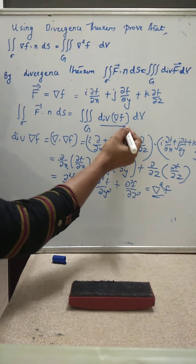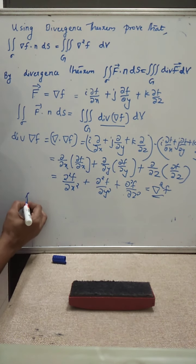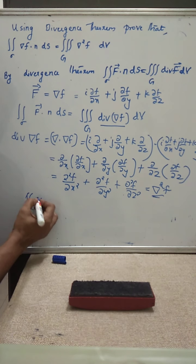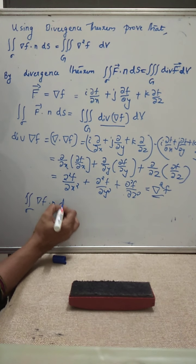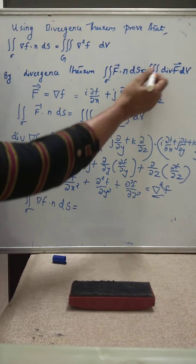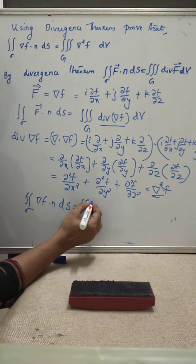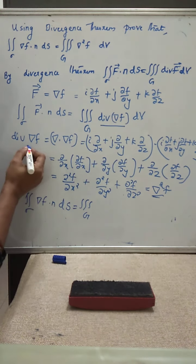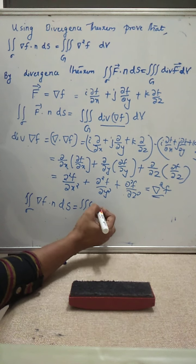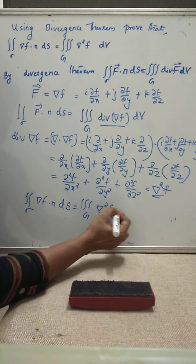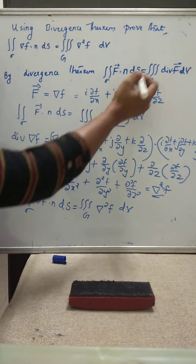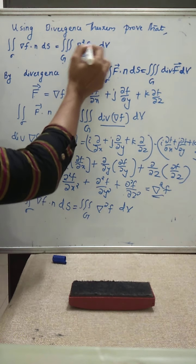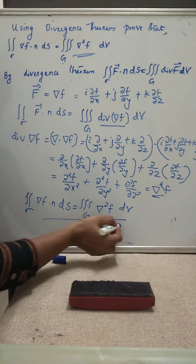So on the right hand side, the double integral over sigma of capital F, that is del f, dot n dS becomes the triple integral over G of div F, that is div of del f, which we obtained as del squared f dV. This is the required answer: the triple integral over G of del squared f dV.